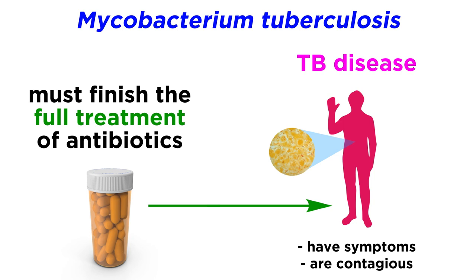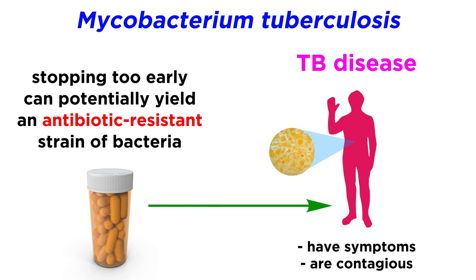Like with all diseases that are treated with antibiotics, it is very important that people who have TB disease finish the full treatment of antibiotics, taking great care to use the drugs as directed. If they stop taking the drugs too soon because they feel better, they can very easily become sick again, but this time the bacteria are likely to have developed resistance to those drugs — an example of natural selection in action.